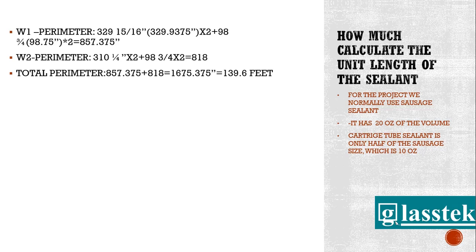So we can easily get the perimeters of W1 and W2 — simply two horizontal and two vertical parameters added together. These two frames together have a total perimeter of 139.6 feet.